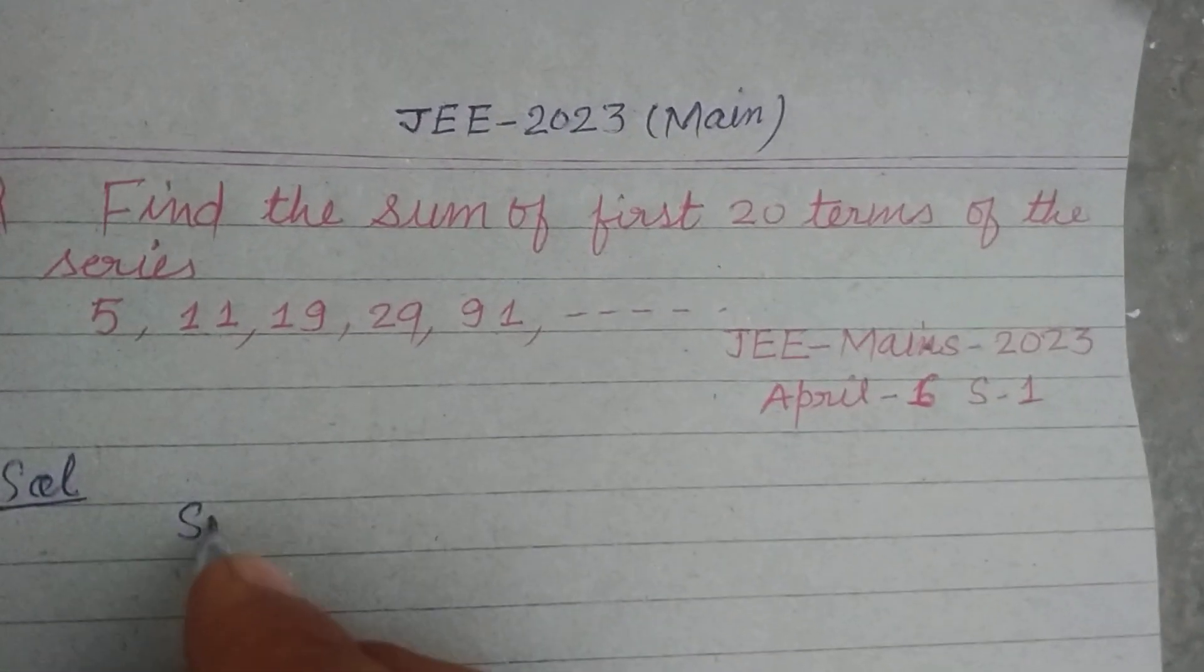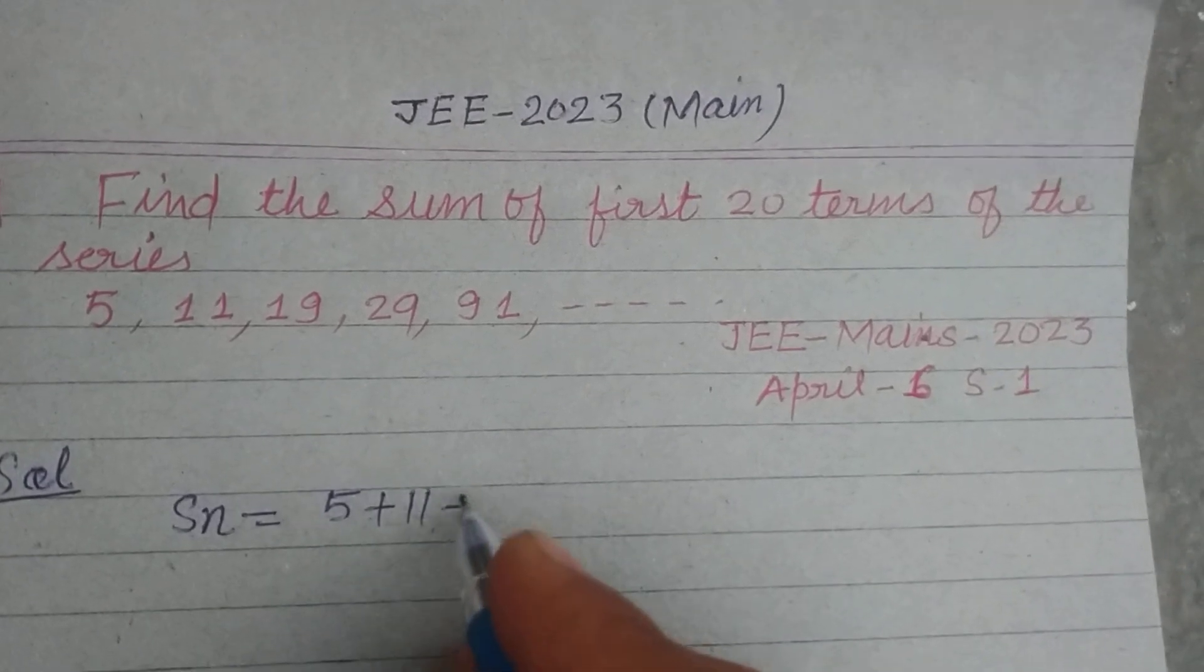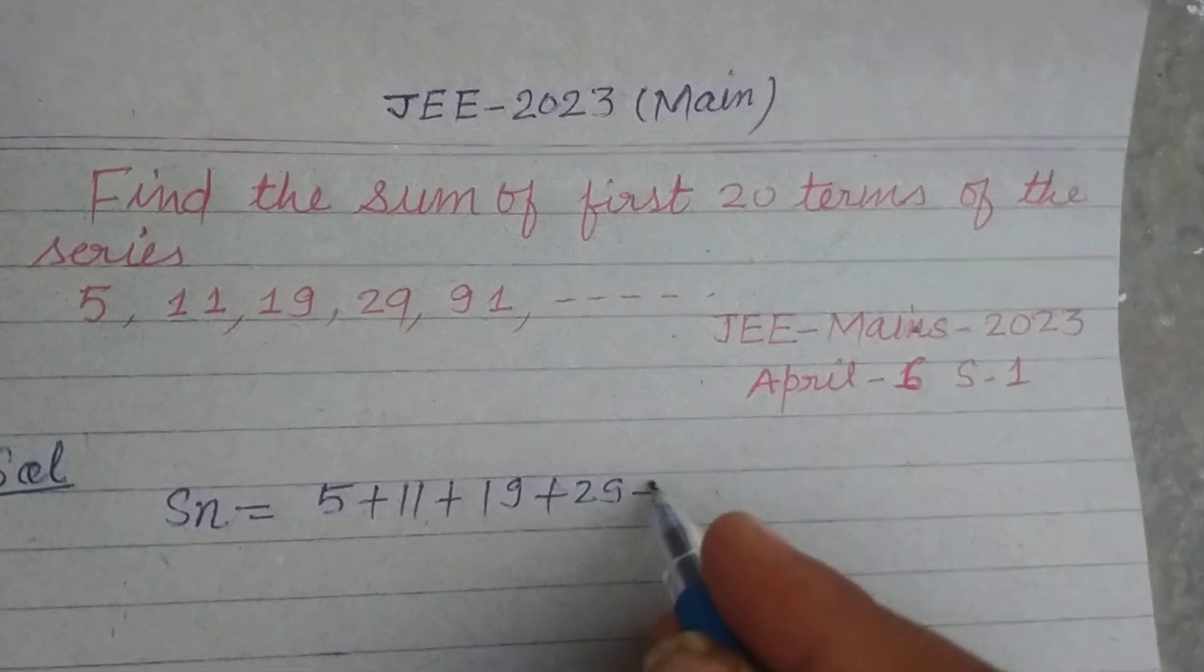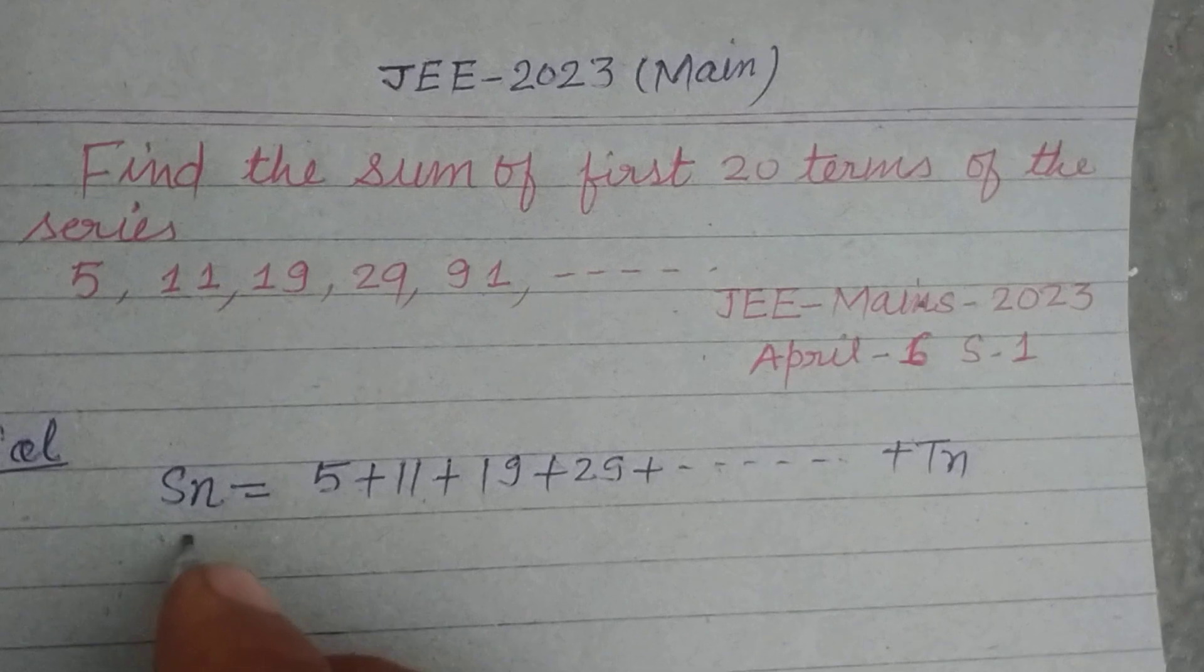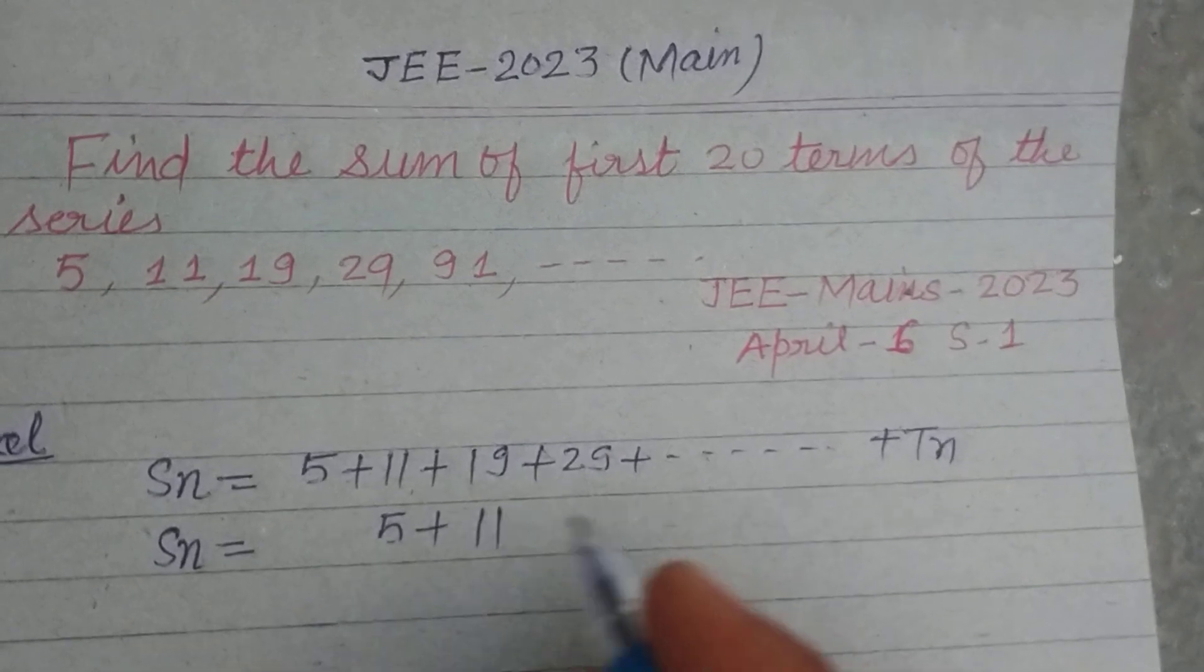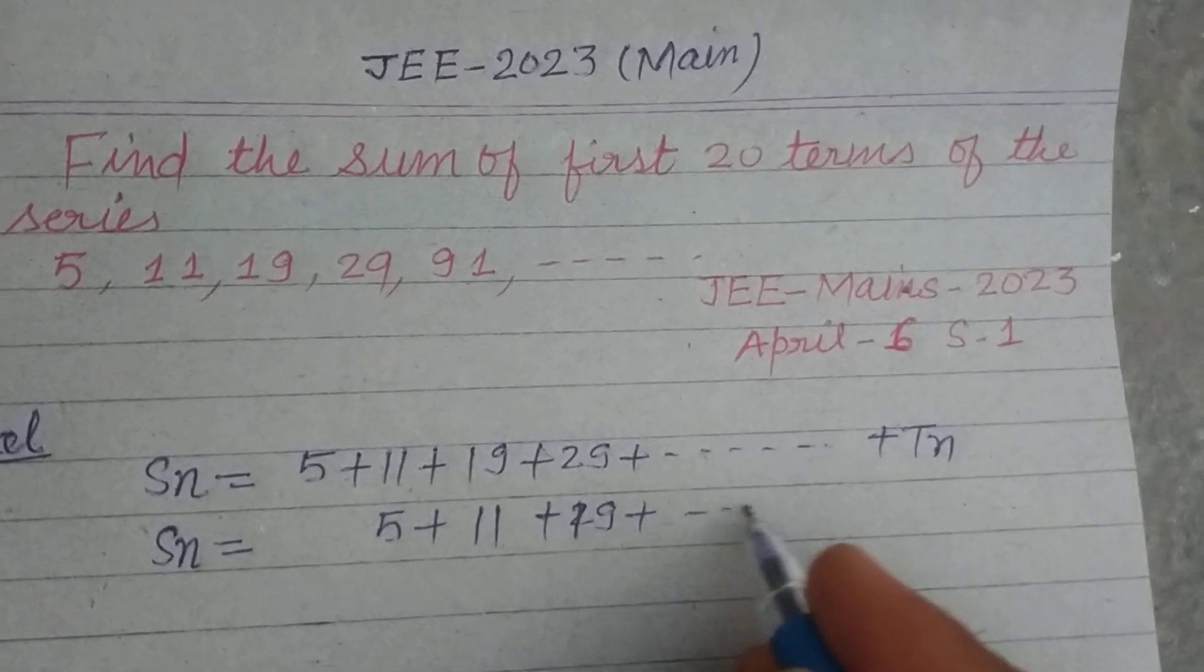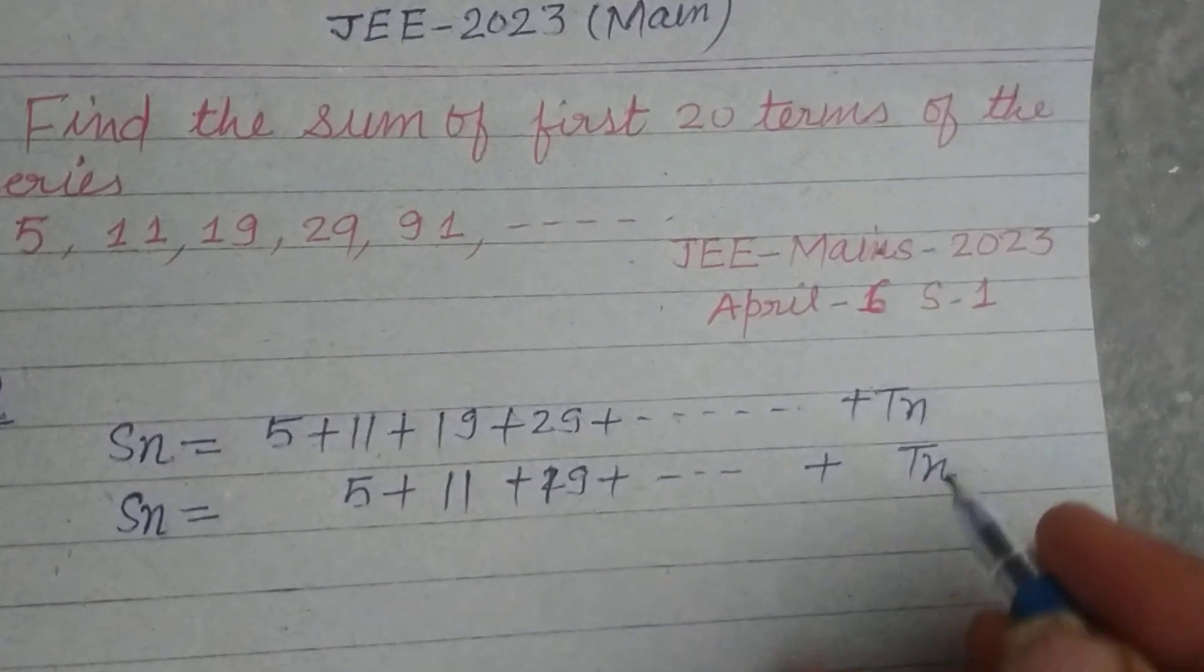First we write the sum of the terms: 5 plus 11 plus 19 plus 29 plus and so on, up to N terms. Now we shift the first term here: 5 plus 11 plus 19 plus and so on, TN.